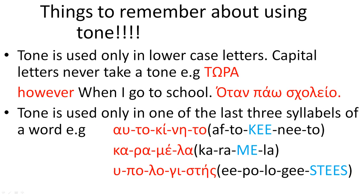Tone is used only in lowercase letters. Capital letters never take a tone. There is, however, an exception — and this is when the first letter of a word in a new sentence has a tone. The first letter of a word in a new sentence is always written as capital, and when it also has a tone, then we write it as well. Take for example the sentence otan pao sto scholio — when I go to school. The letter omicron, although it's capital, does have a tone.